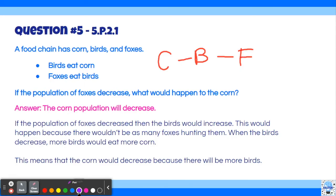There's nothing too special about it, but if the foxes decrease, there would be nothing to eat the birds. So the birds would see an increase in population. And then more birds would eat more corn. So the corn would see a decrease.